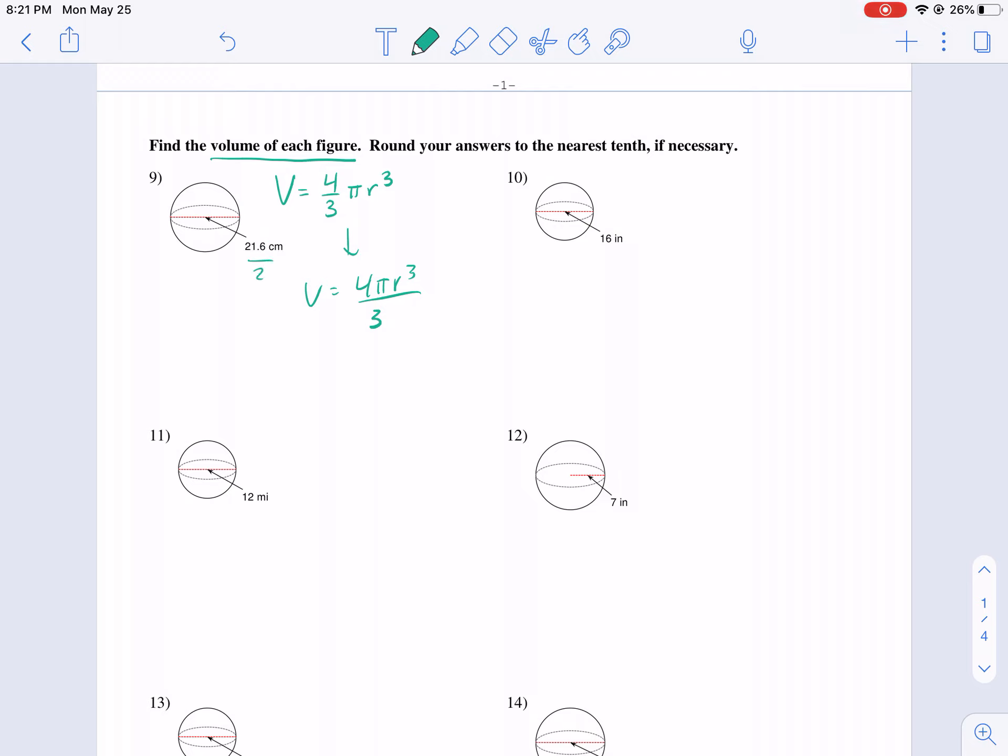So our radius equals 10.8 and we're going to plug that into our formula for volume. Volume equals 4 times π times our radius which is 10.8, and now we're going to cube it. One way to remember the cube is because we're talking about space in three dimensions, we need to raise it to the third power. So now I just multiply across, well first I do exponents to the third power.